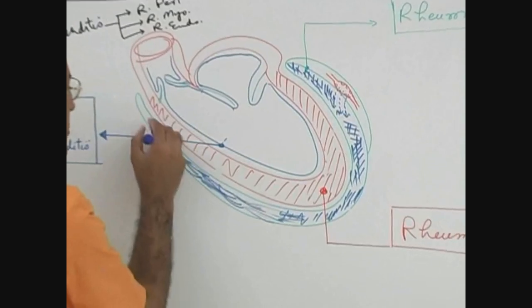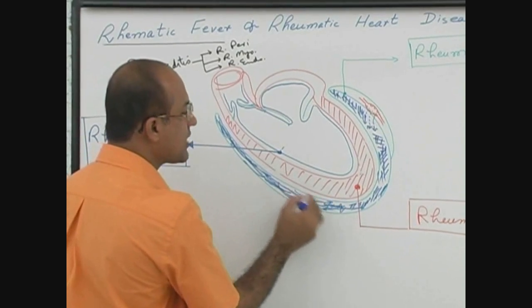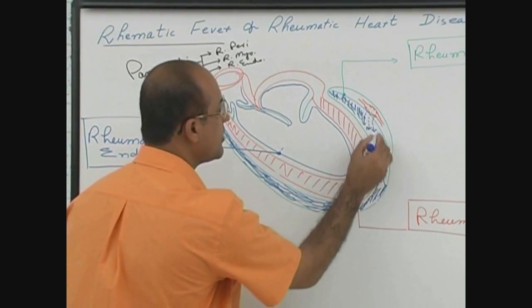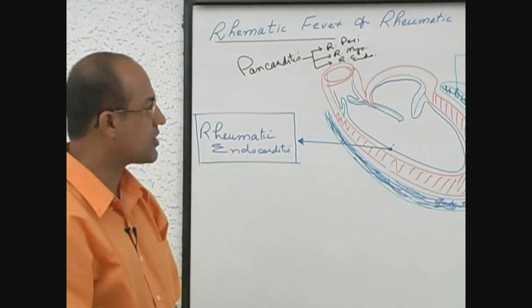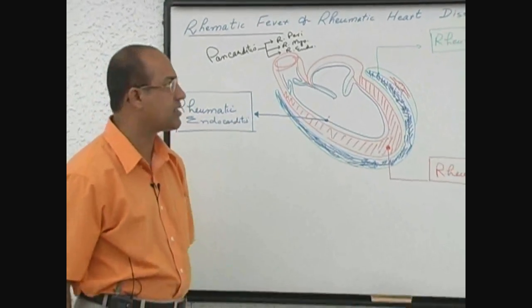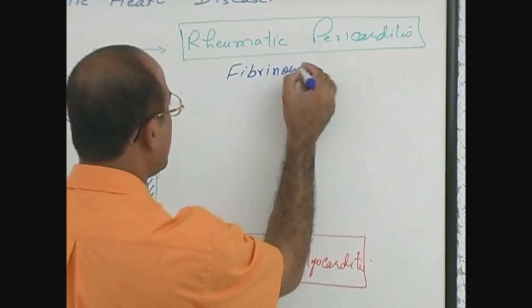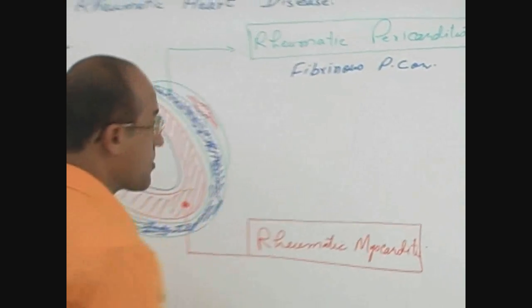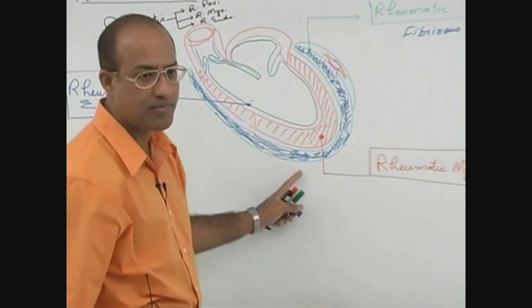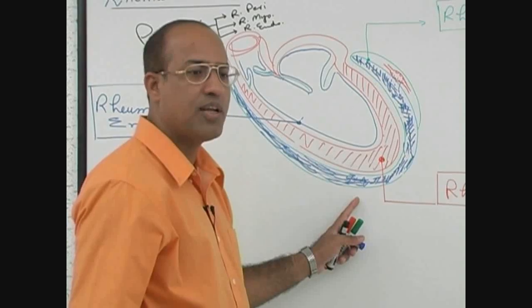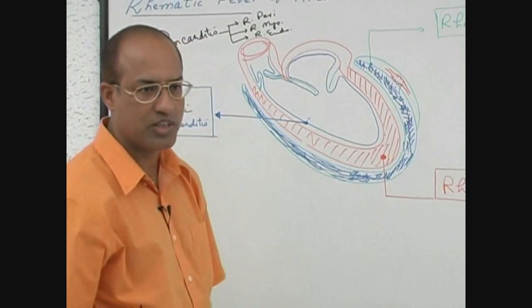Due to accumulation of fibrin deposits in the pericardial sac, this type of pericarditis is called fibrinous pericarditis. Remember, fibrinous pericarditis is a feature of any immune-mediated pericardial inflammation, and of course rheumatic pericarditis is immune-mediated.